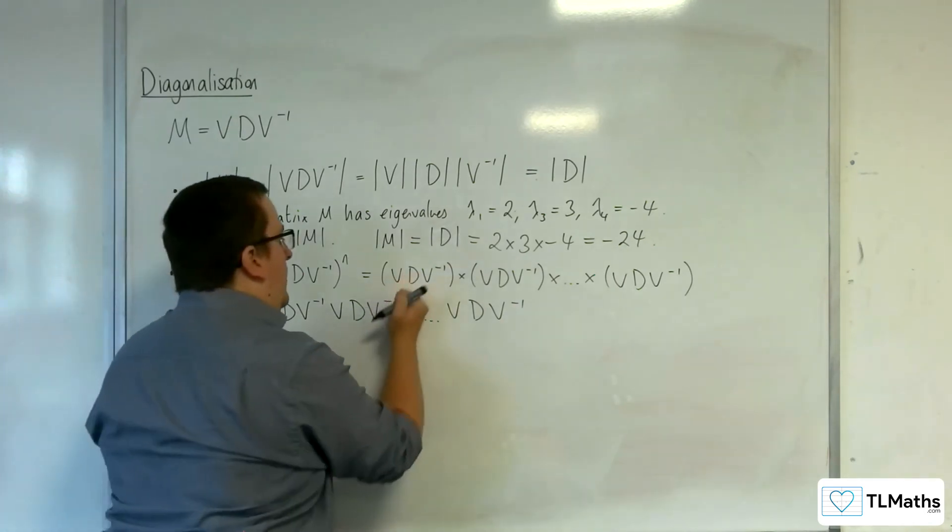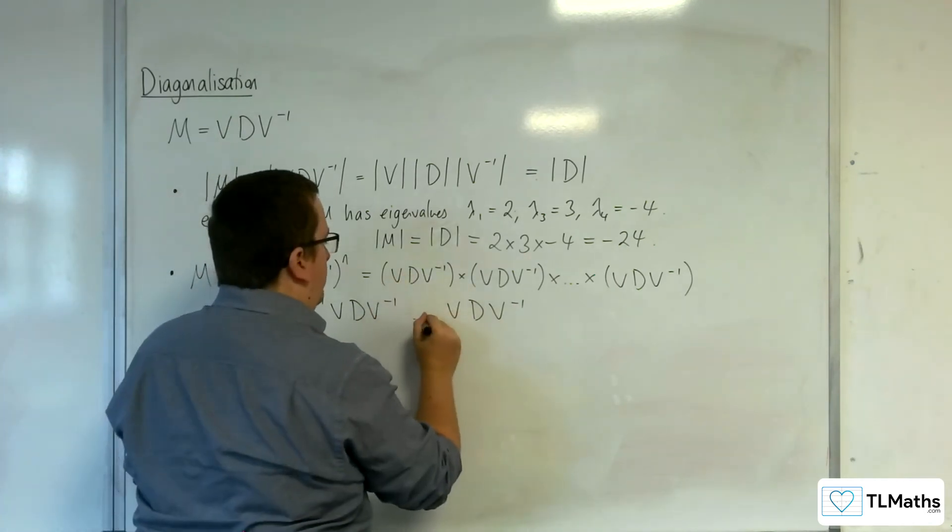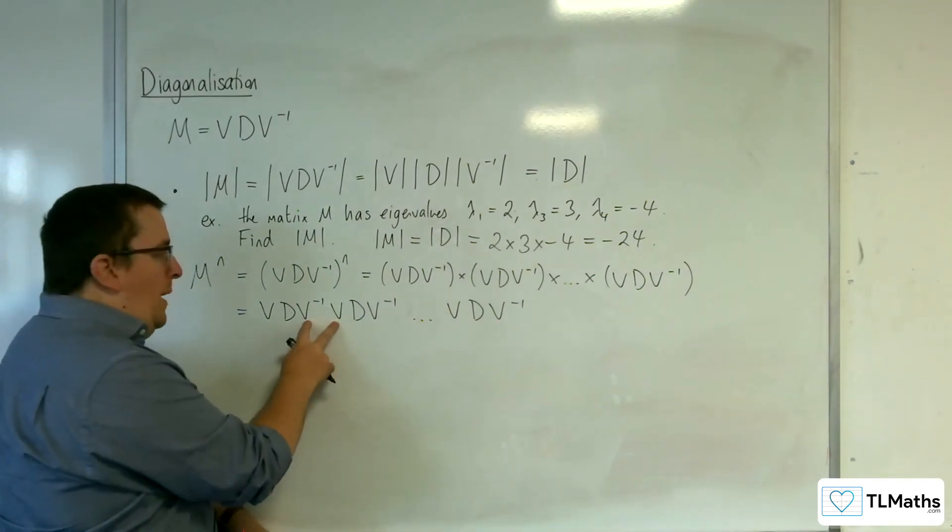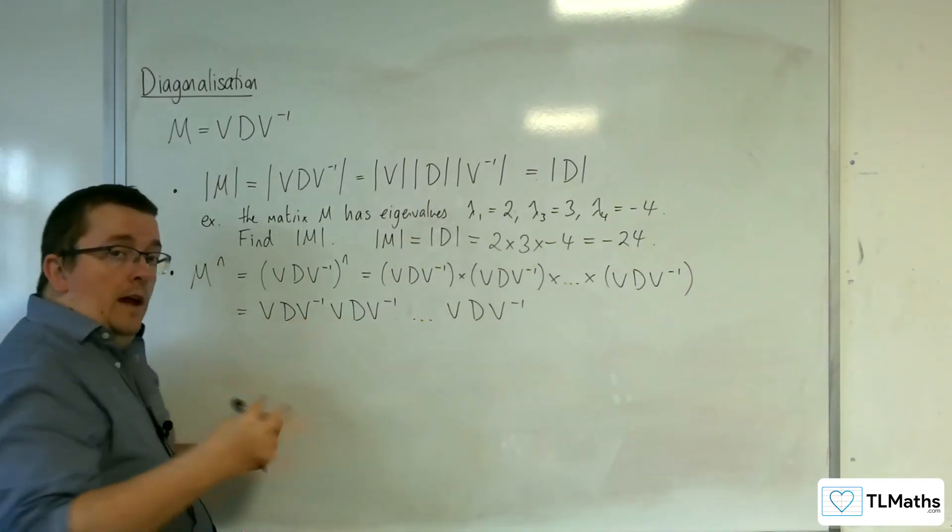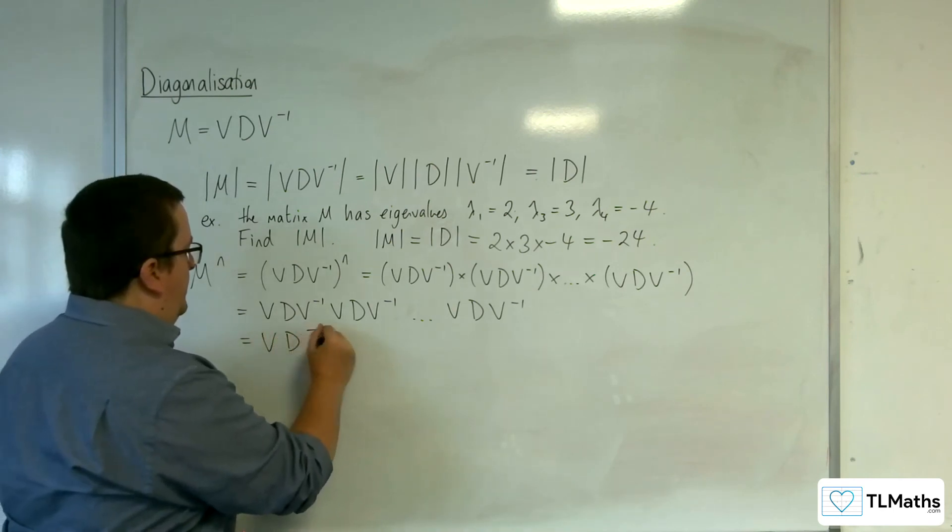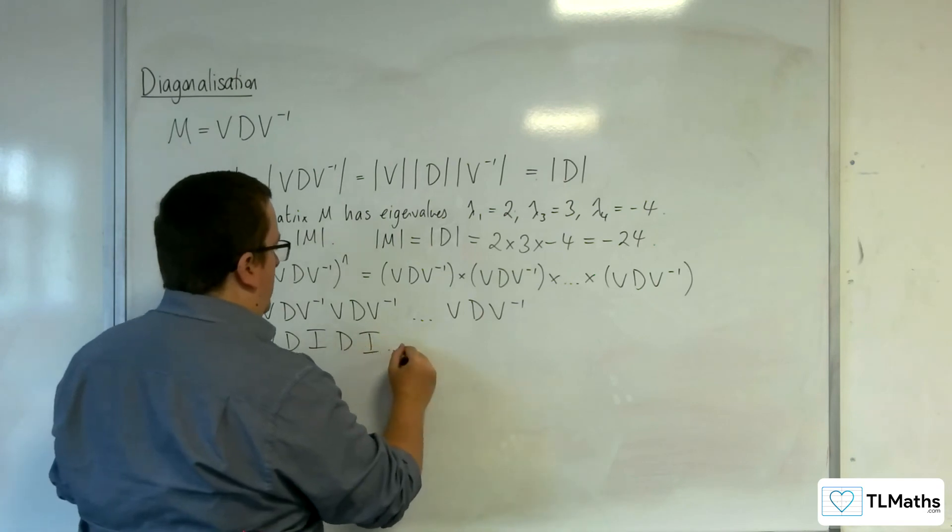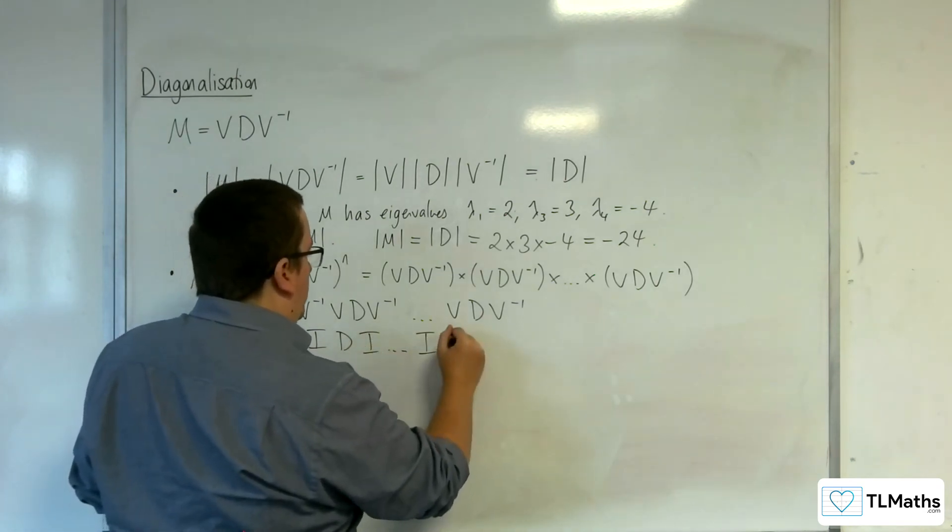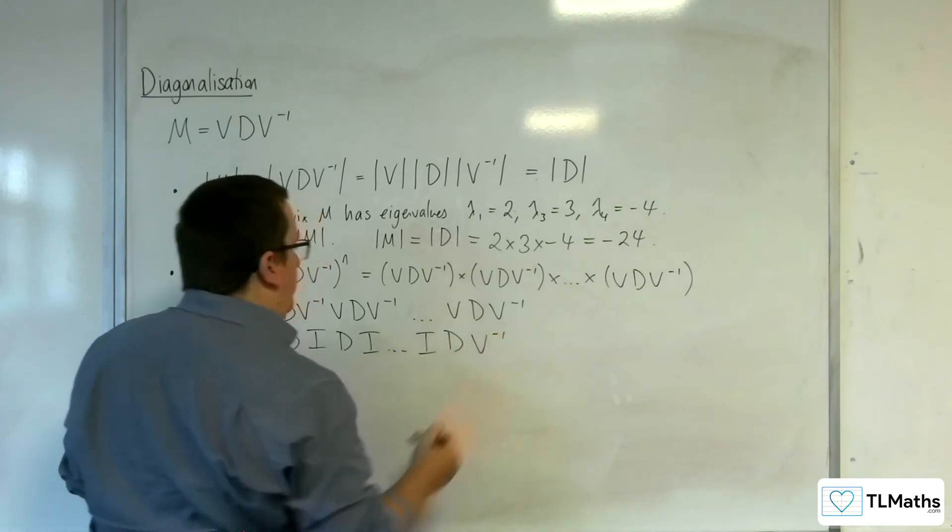So each of these ones in between is the identity matrix. So you get V D identity, D identity, etc., I D V minus 1.